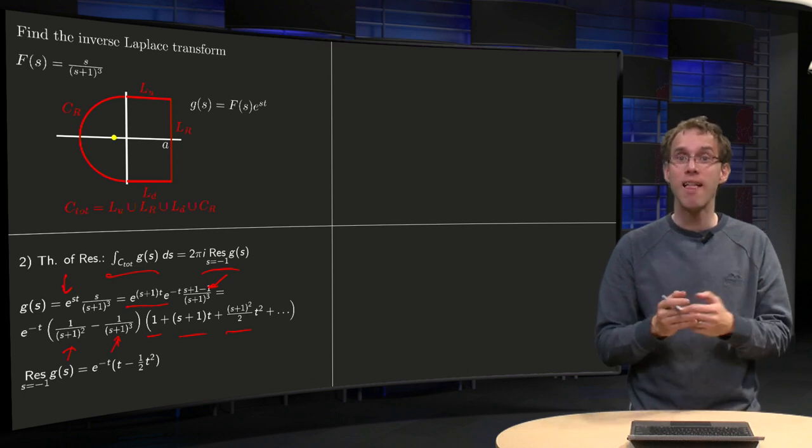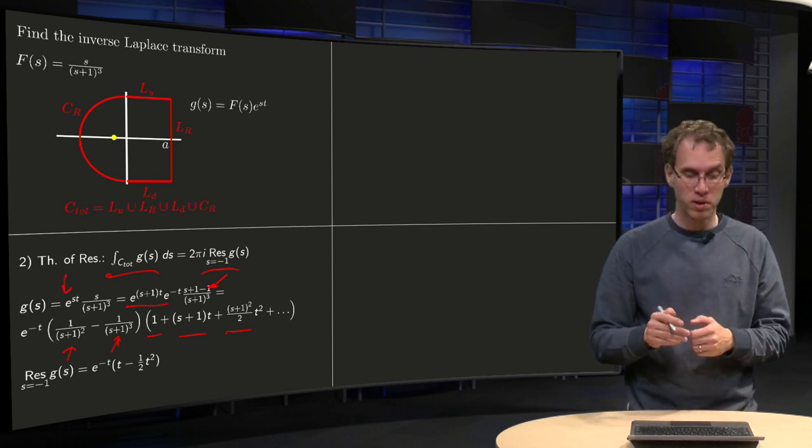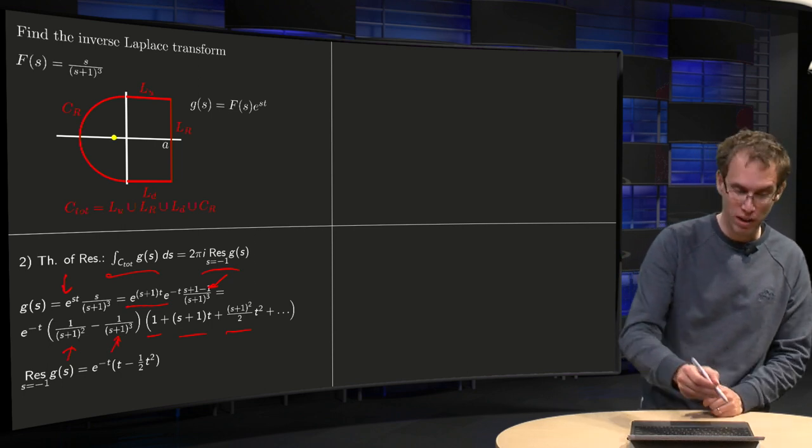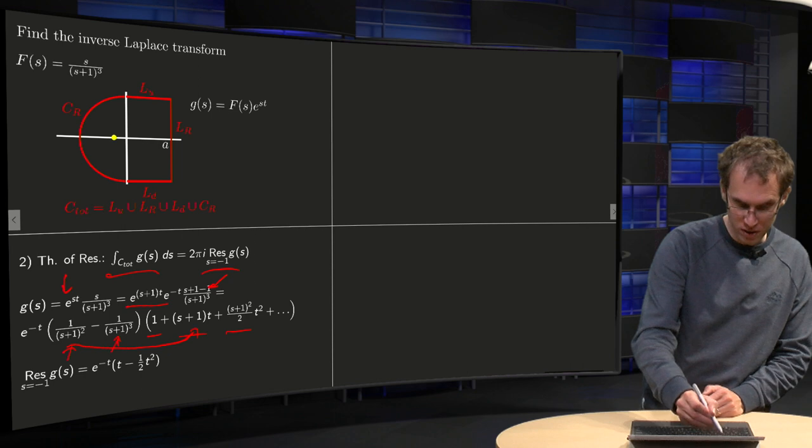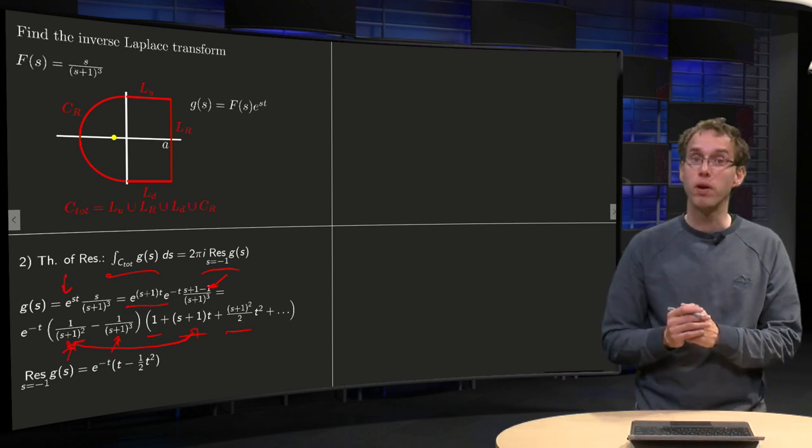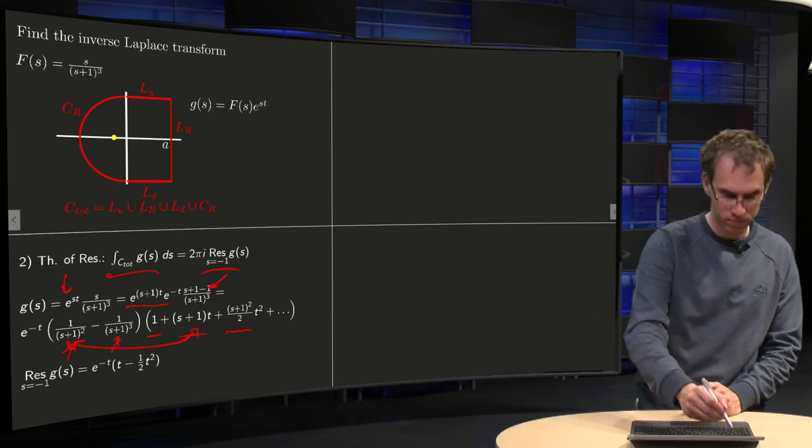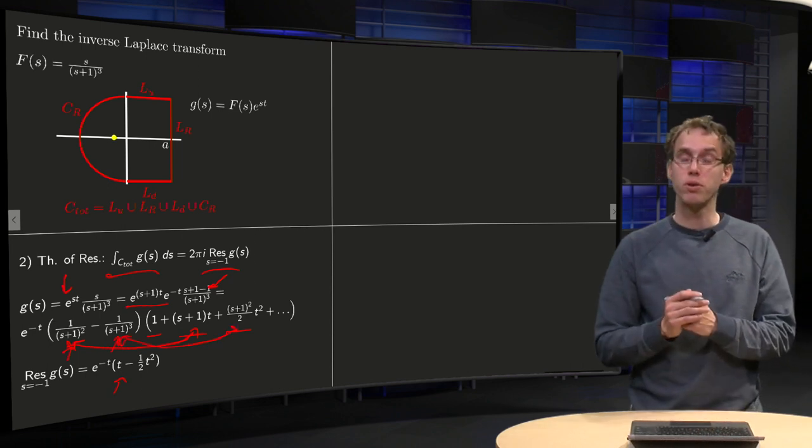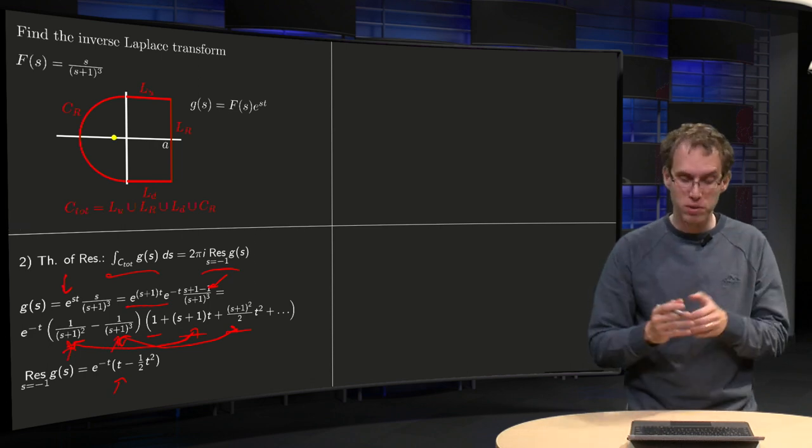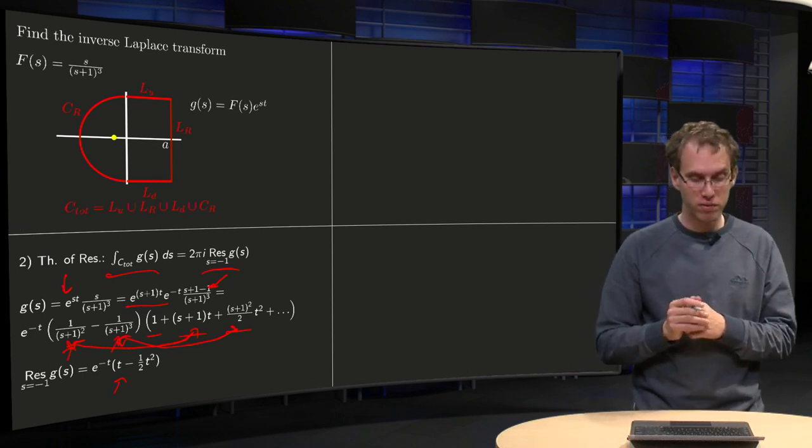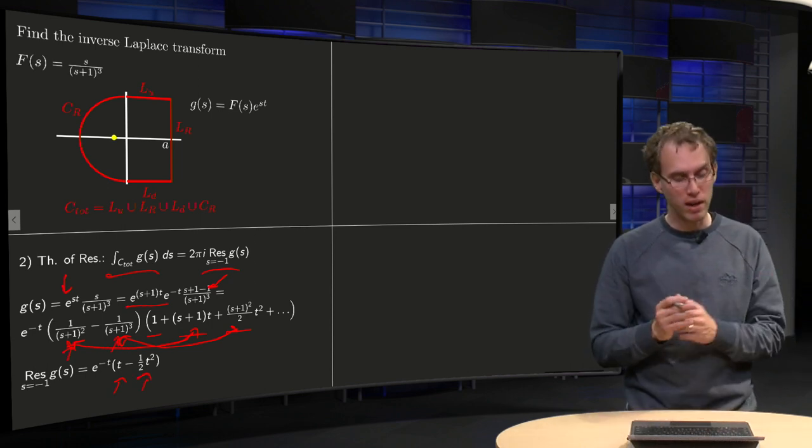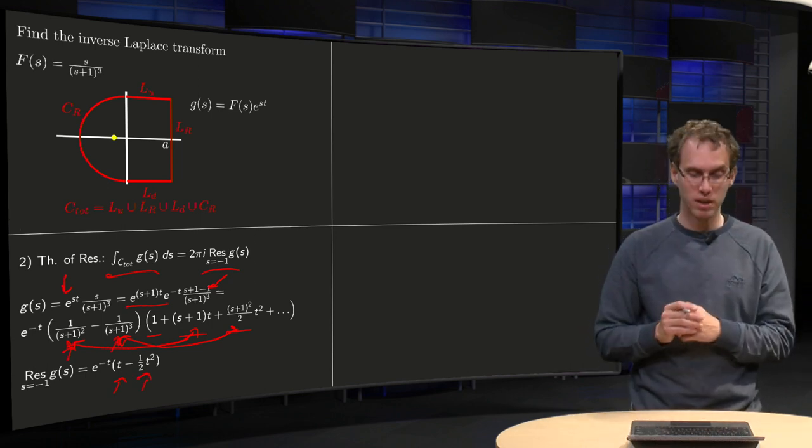Because the only thing we need is the one over (S plus one) term. So what do we get in our one over (S plus one) term, what do we get for our residue? The combination of this one with that one of S plus one yields one over (S plus one) times T, and the combination of this term and that term yields also contribution of the form one over (S plus one) with minus one half T squared. So there we have our residue, e to the minus T times (T minus one half T squared).